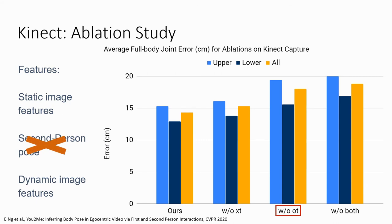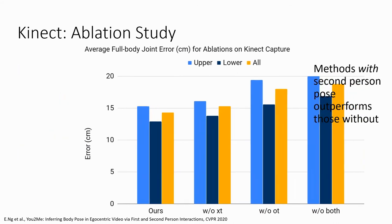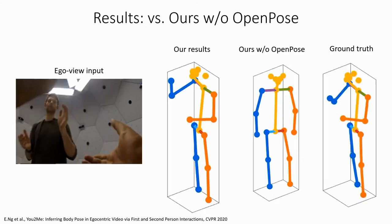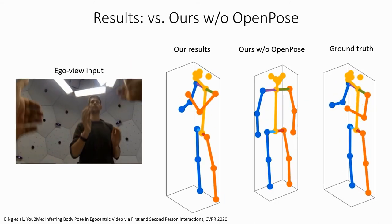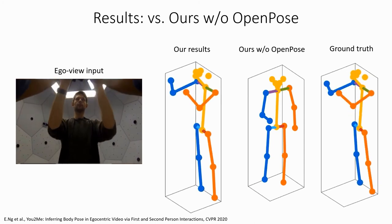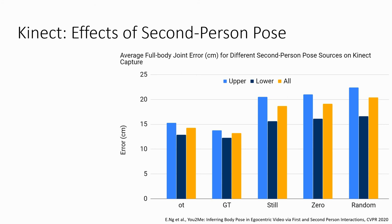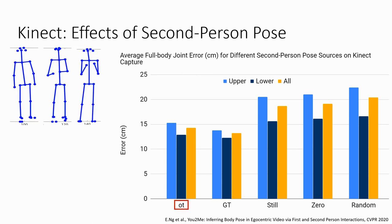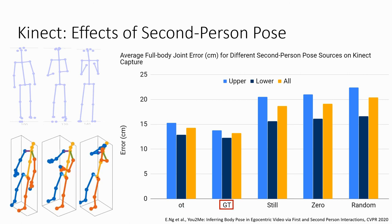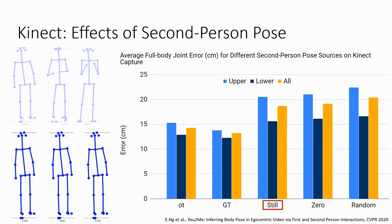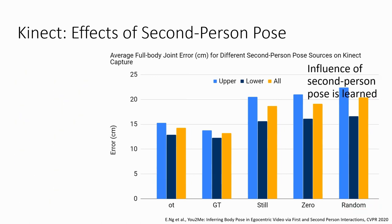In ablation studies, removing the second-person pose feature most significantly decreases performance. This is best shown here, where the OpenPose feature allows our approach to accurately predict down to which arm moves forward in a hand game. While we achieve successful results using 2D OpenPose skeletons, we get further improvements by feeding in the 3D skeletal ground truths of the interactee. Finally, we verify that our network learns appropriate correlations from the inferred second-person pose by feeding in incorrect 2D skeletons, which causes the network's performance to drop.